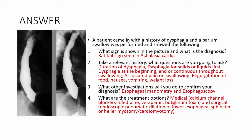Alternatively, you could inject botulinum toxin. Definitive surgical interventions include endoscopic pneumatic dilatation of the lower esophageal sphincter, which carries a risk of esophageal perforation. You may also perform a Heller myotomy — also called a cardiomyotomy — which is usually the definitive treatment.